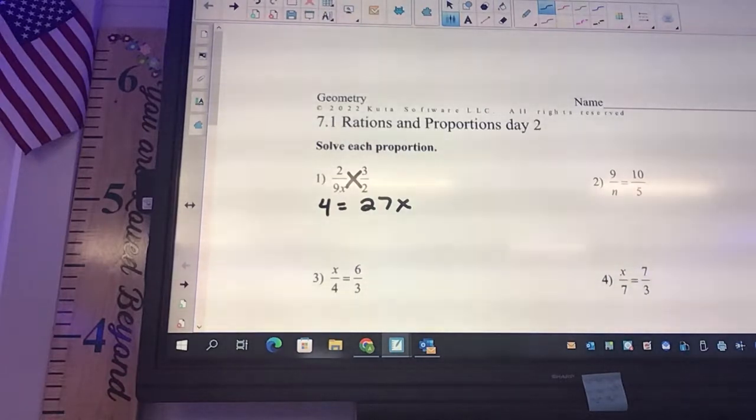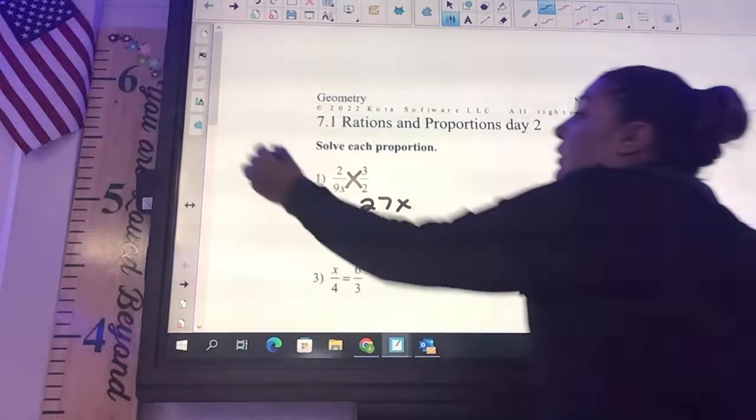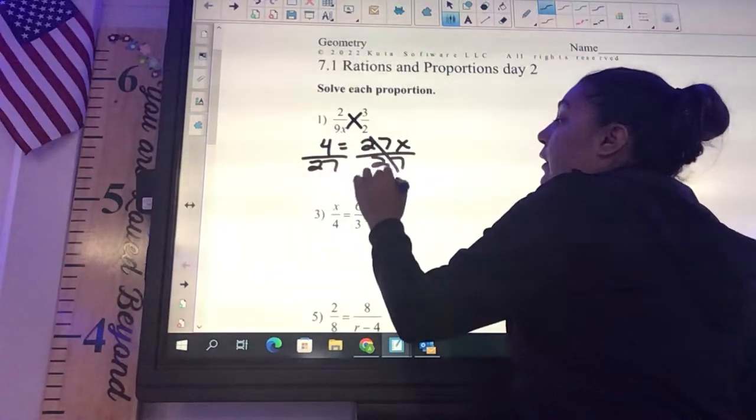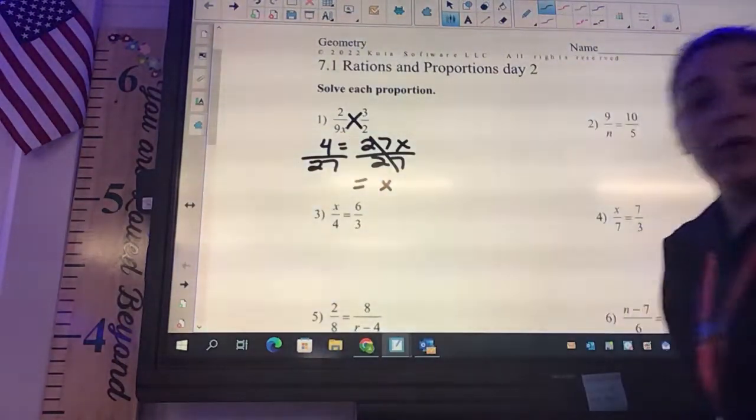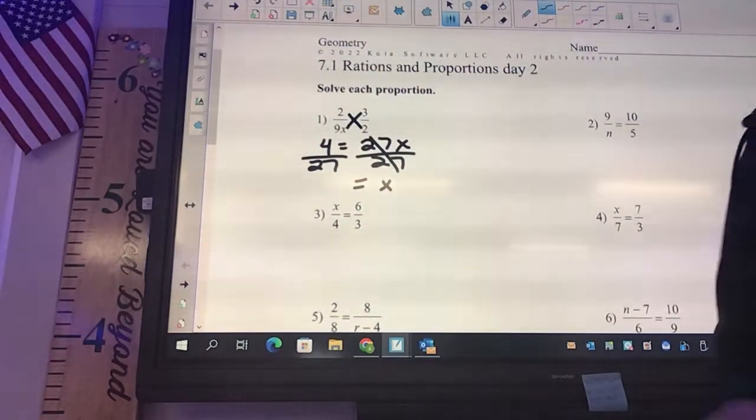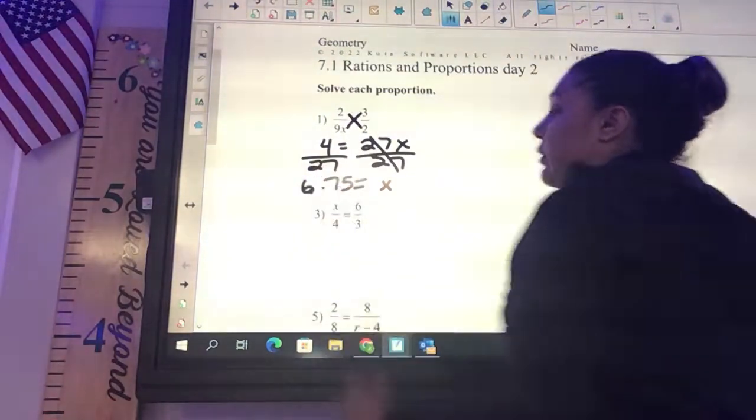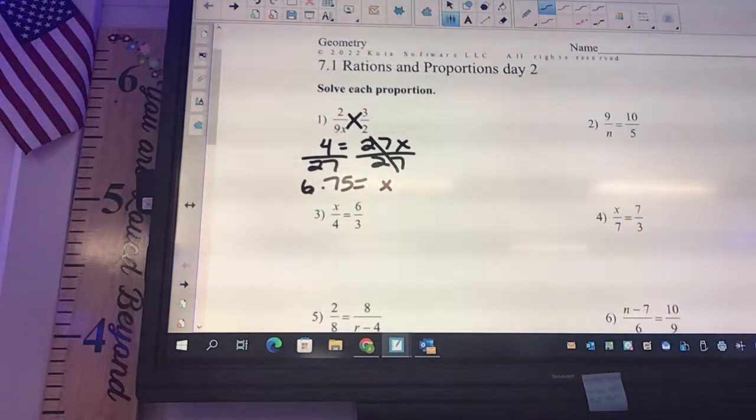And then we're going to solve for x. So we need to divide. We get x equals, and what is 4 over 27? 6.75. You can do it to two decimal places, you don't need to round.